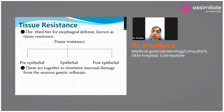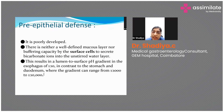The third tier of anti-reflux mechanism involves tissue resistance, which can be divided into pre-epithelial, epithelial, and post-epithelial defense. Pre-epithelial defense is not as well developed in the esophagus as it is in the stomach, but there is a small layer of mucus and a buffering layer present in the pre-epithelial area.